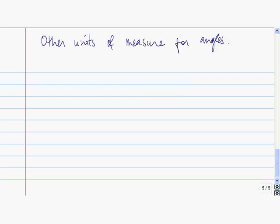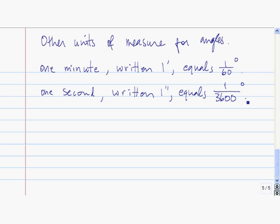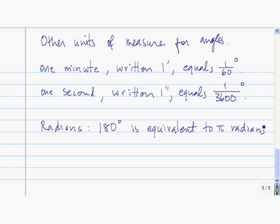So far I've only been talking about degrees when discussing the unit for the measure of an angle. There are other units you can use to measure angles. Two examples are minutes and seconds. One minute is equal to 1/60th of a degree, written with a little apostrophe. One second is equal to 1/3600th of a degree, written with two little apostrophes.